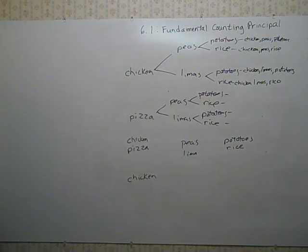With pizza as the main course, the same branching applies: pizza-peas-potatoes, pizza-peas-rice, pizza-limas-potatoes, and pizza-limas-rice — four more outcomes for a total of eight. The complete sample space lists all eight outcomes: chicken-peas-potatoes, chicken-peas-rice, chicken-limas-potatoes, chicken-limas-rice, pizza-peas-potatoes, pizza-peas-rice, pizza-limas-potatoes, and pizza-limas-rice. That's how we would list our sample space.